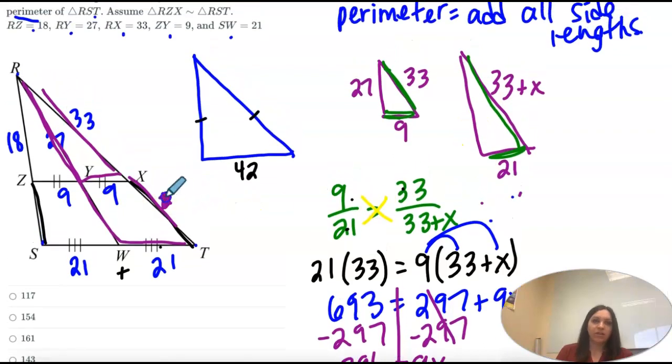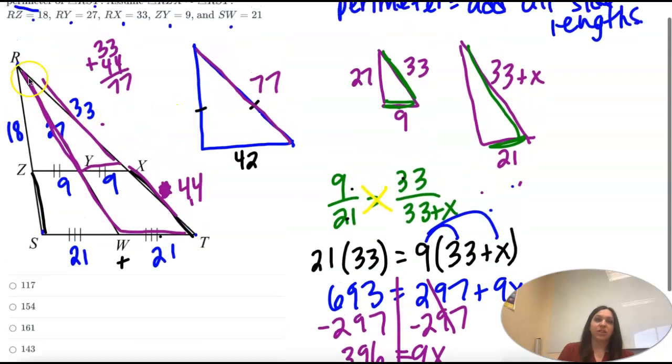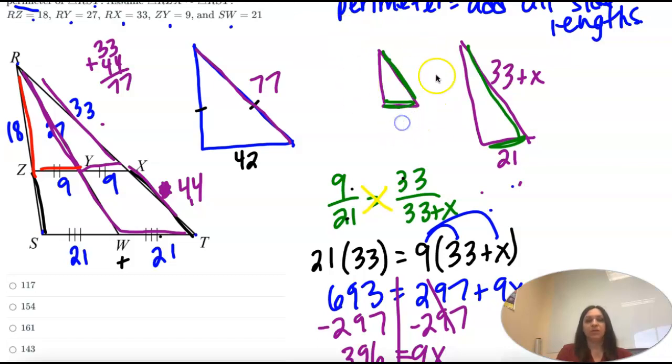So 396 divided by 9 is 44. So we just found this side is 44. So on our big triangle, we will take 33 plus 44. This side is 77. So we're almost there. Now we need to know this side. And we're going to do exactly what we just did. We're going to take the small triangle. So I'm going to just erase these for space purposes. This side is 18, 27, 9.